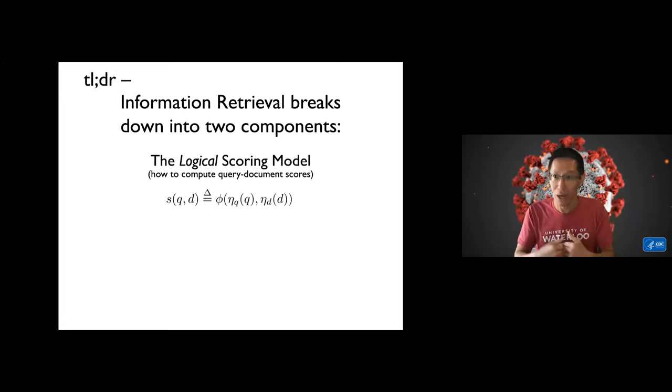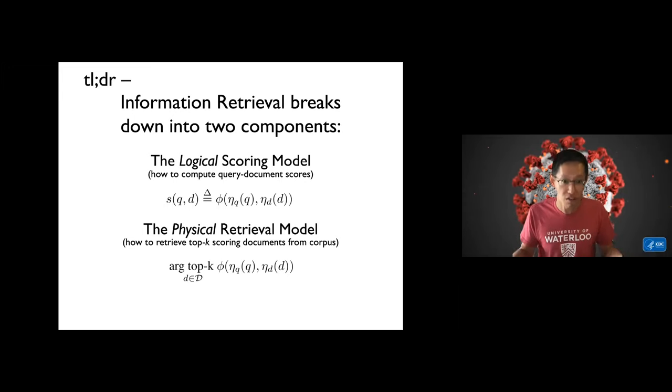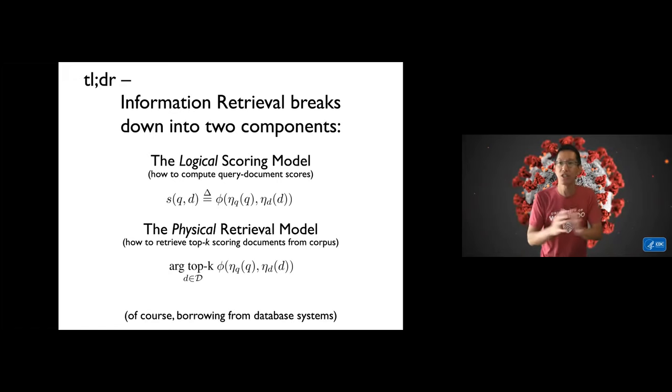That's essentially the relevance score that you're searching by. In addition to the logical scoring component, there's also the physical retrieval model, and this is the part that determines how you do the top k scoring across an arbitrarily large corpus. Our argument is IR can be broken down into these two parts: logical scoring model and physical retrieval model. This is borrowing terminology from database systems where there's talk between a logical plan and a physical plan.